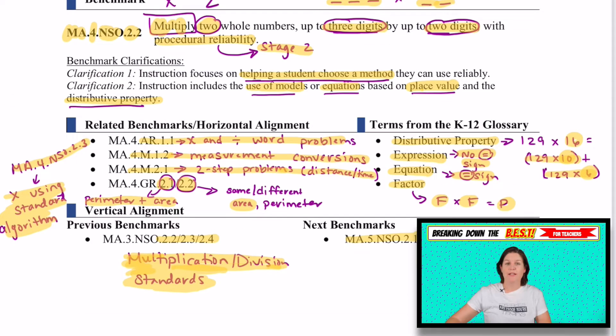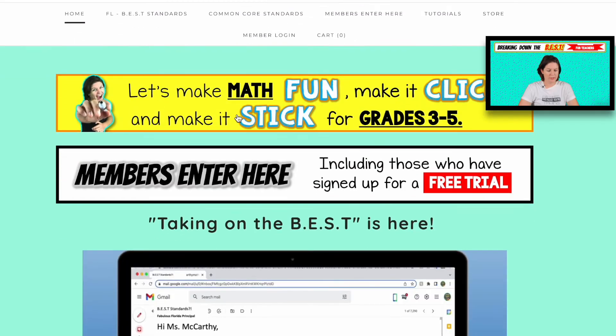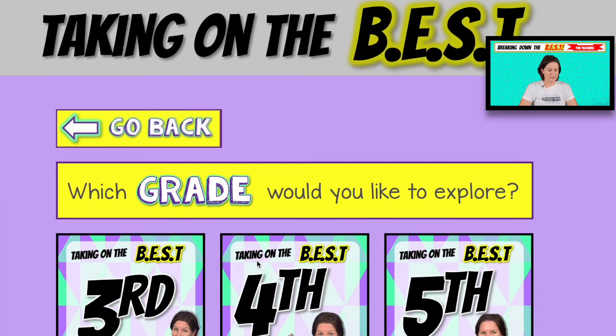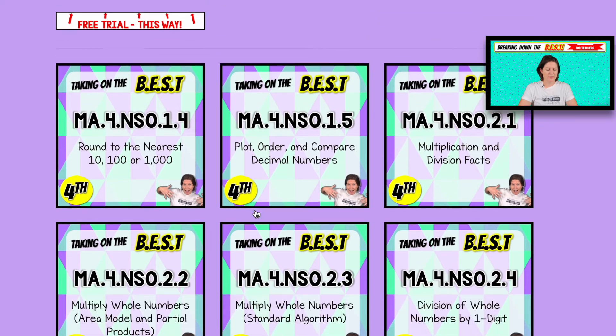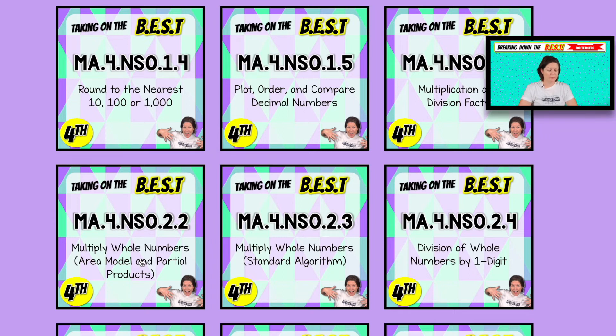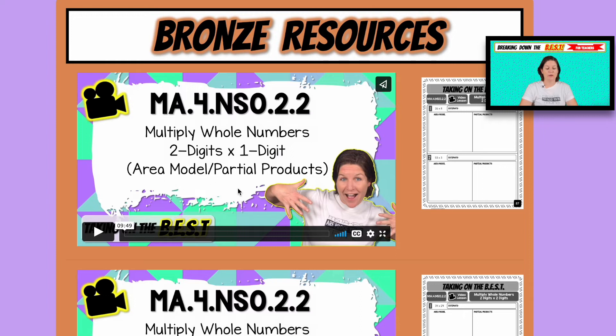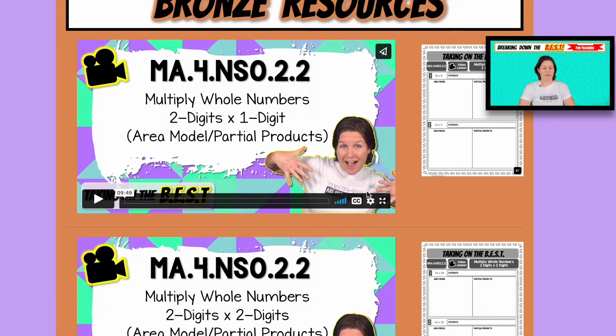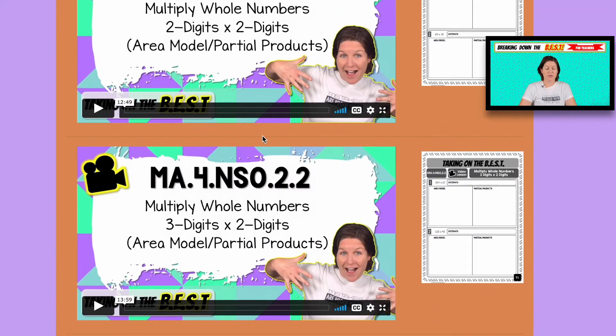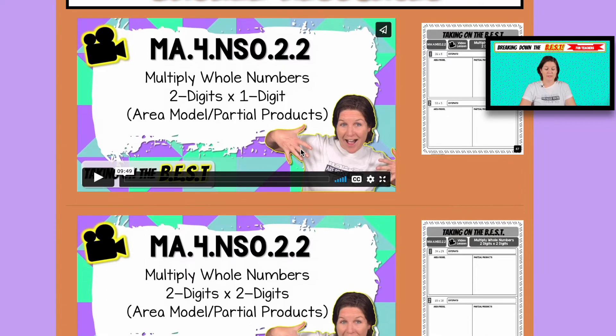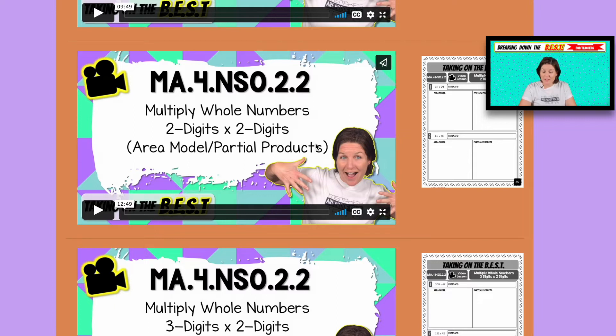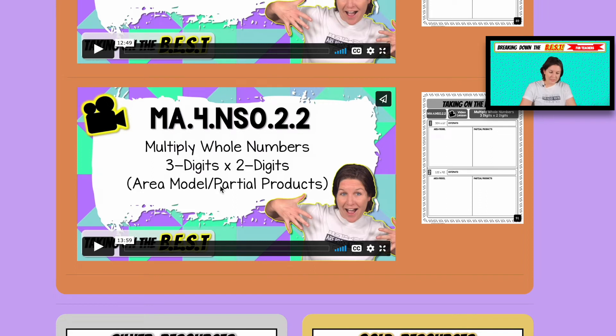Alright, let's jump into what you have access to in your taking on the BEST resources. So going to McCarthy Math Academy members enter here, taking on the BEST enter here, which grade fourth grade, which strand NSO. And we are on 4.NSO.2.2, multiplying whole numbers. In this case, I'm teaching using the area model and the partial products model. Okay, so you can see we have one, two, three video lessons here with a bronze membership. And all three video lessons come with a printable student guide, where you're walking through the same resource that I'm using in the video. This video, we have multiplying whole numbers with two digits times one digit using the area model and partial products. Then in the next one, we'll increase it to two digits by two digits, using those same strategies. And then finally, three digits times two digits.